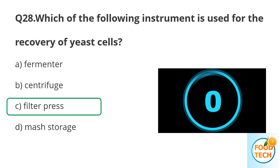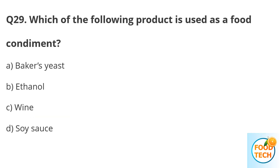Answer C. Filter press. Question 29. Which of the following products is used as a food condiment? A. Baker's yeast. B. Ethanol. C. Wine. D. Soya sauce.